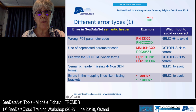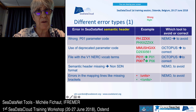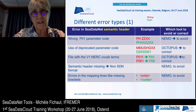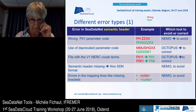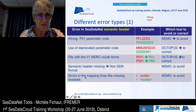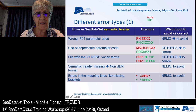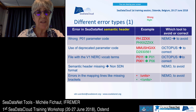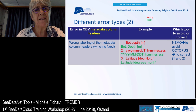We also found files using old versions of the vocabulary — P011 instead of P01 and P061 instead of P06. This can also be corrected on the fly using Octopus. We found some files without a semantic header, which means the file is not C-DataNet format. We also found files where the bracket was missing for the units in the semantic header — this can be avoided using NEMO tools but must be corrected manually if already present.